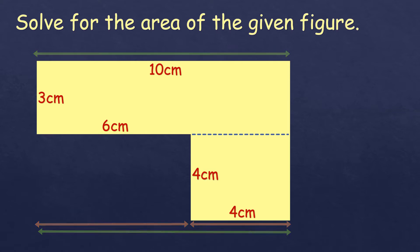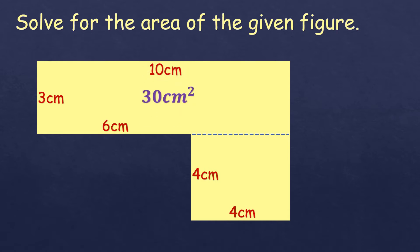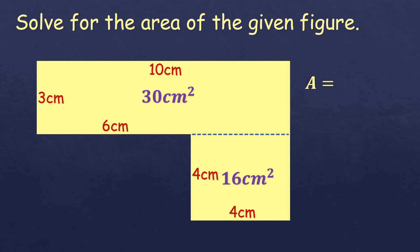Now let us get the area. The area on top is 3 times 10, which is 30. At the bottom, it's 4 times 4, which is 16. So the area of the irregular shape is 30 plus 16, which is 46 cm².